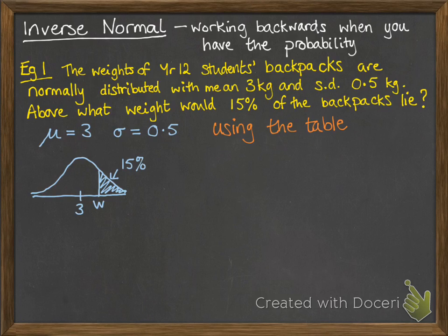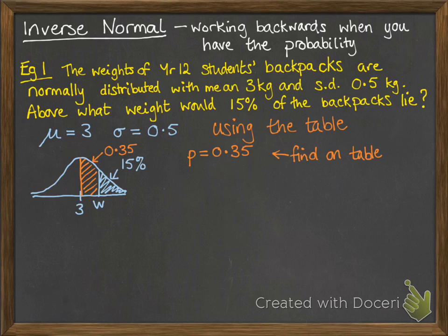First of all, we can do this using the normal distribution table — I'll show you how to use the graphics calculator in a second. Using the table gives you the area between the mean and your value, so that area would have to be 0.35, to make up the difference between 15% and half. We find 0.35 in the table, and the value of z that gives us that probability of 0.35 is 1.036.